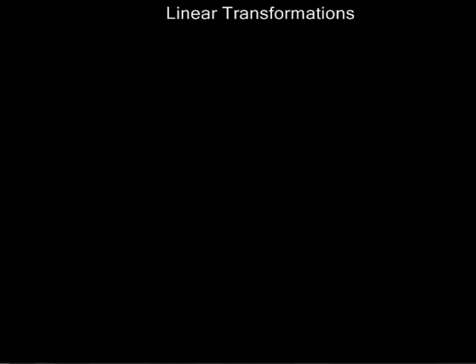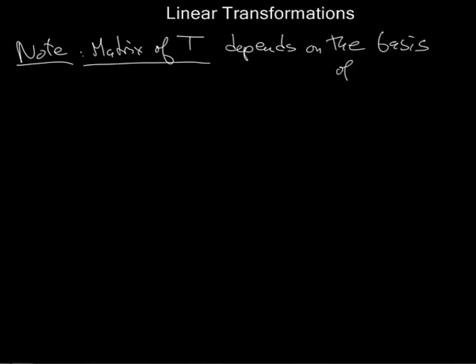And every linear transformation is given by a matrix, and every matrix gives a linear transformation. It's important to note that the matrix you get depends on the basis. It doesn't even mean anything to write down a matrix without a basis in mind. So let's look at an example of that.